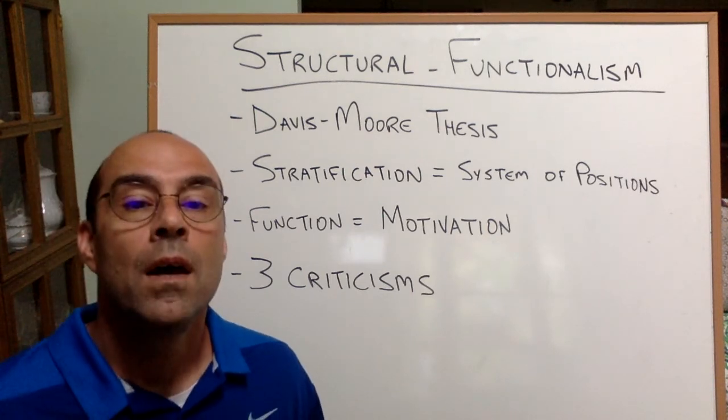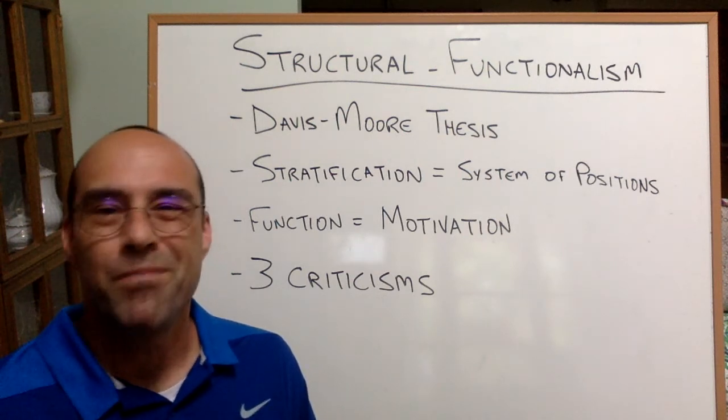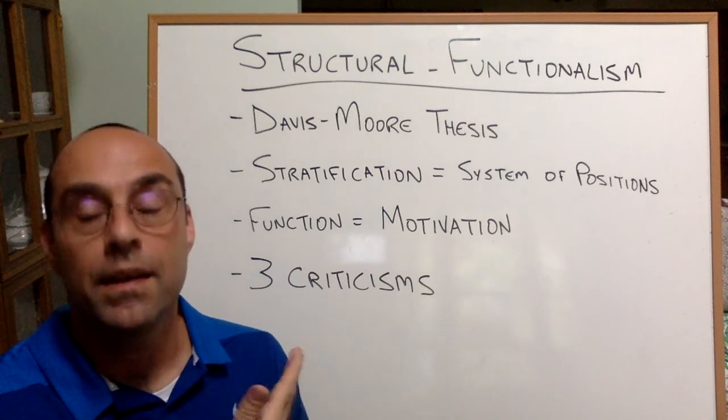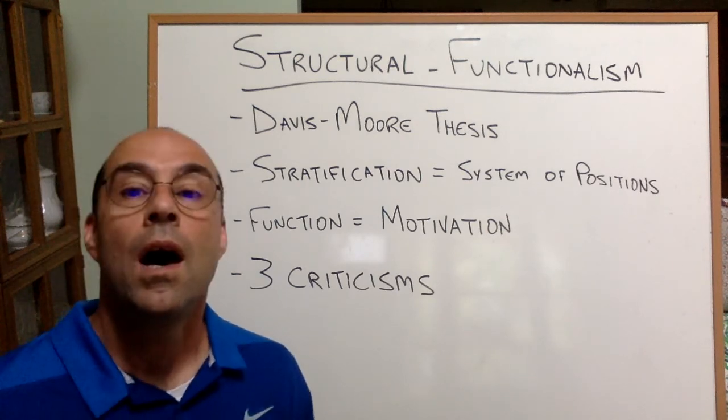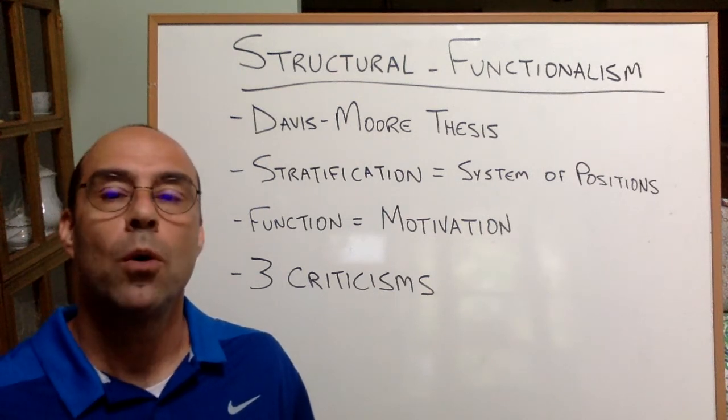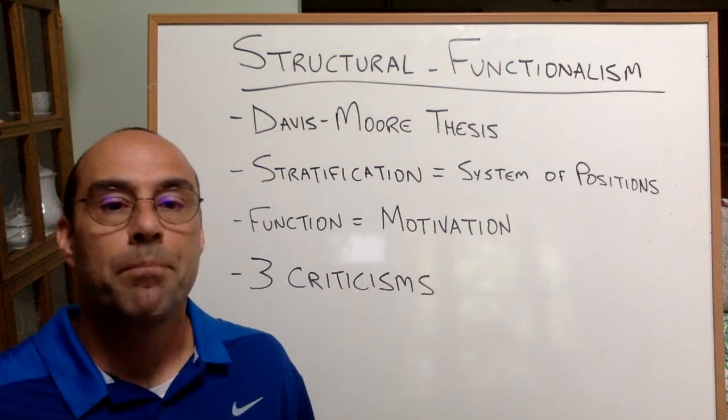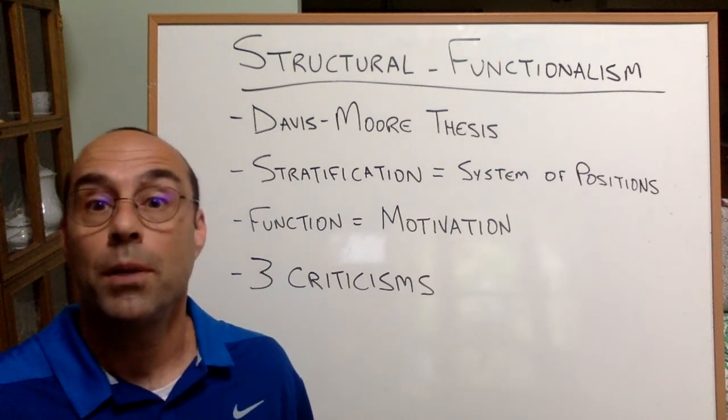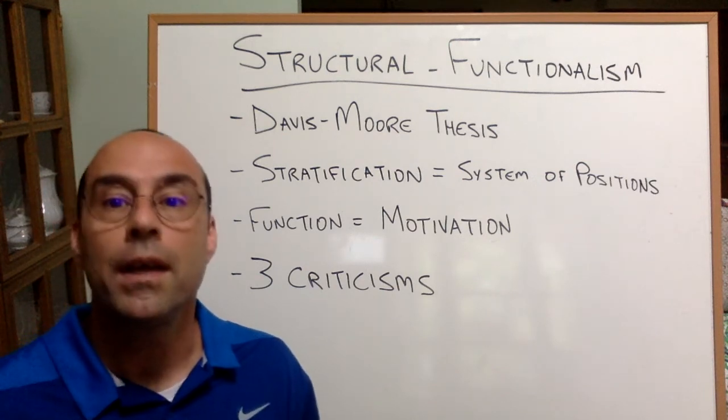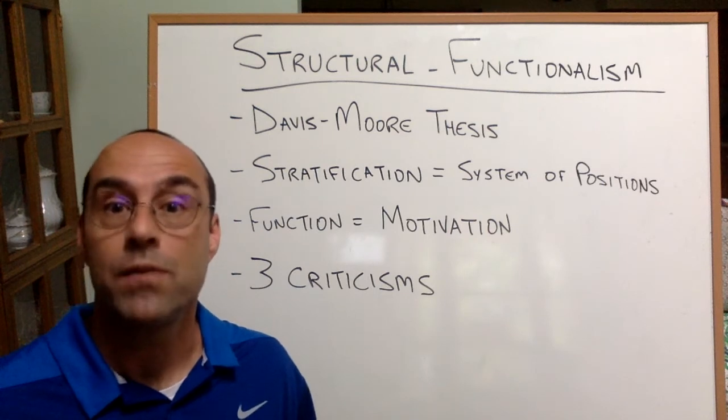So Kingsley Davis and Wilbert Moore are two names that you really don't need to know all that much other than in connection with their thesis. A little bit of background. This happens around 1945. Last week we dealt with W.E.B. Du Bois and Charlotte Perkins Gilman and their kind of radical rethinking of how we need to think about the constituents of society.